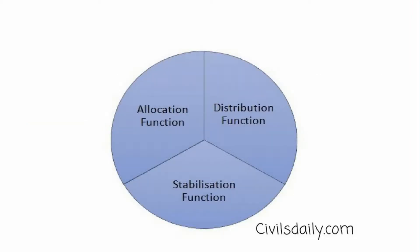The role of government in economic activity can simply be divided into three: allocation function, distribution function, and finally, stabilization function. A government is the system by which a state or community is controlled, and it plays an important role in any modern-day economy, performing many functions.